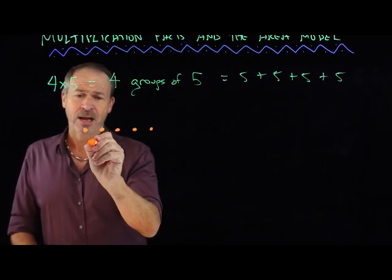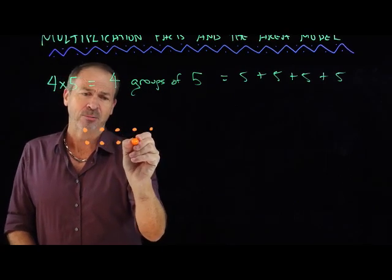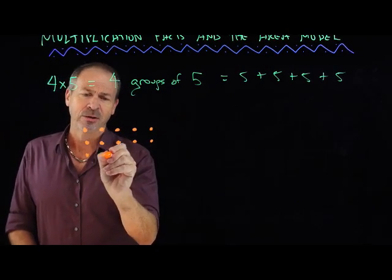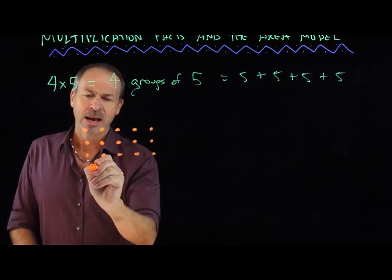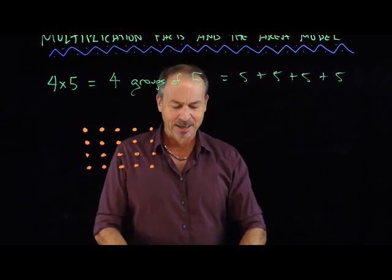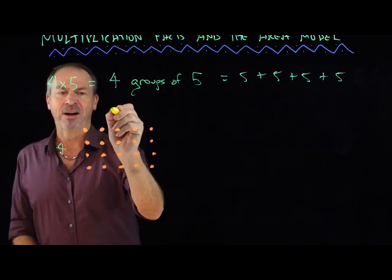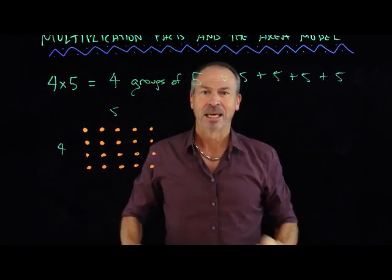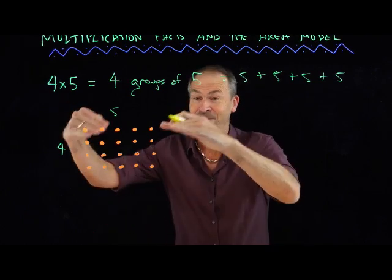Great. I'll do a second group of 5 as a second row of dots. 1, 2, 3, 4, 5. Here comes a third group of 5 as a third row. And there's a fourth group of 5 as a fourth row. So there it is. There's my 4 groups of 5. A 4 by 5 rectangular array of dots.